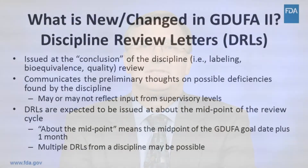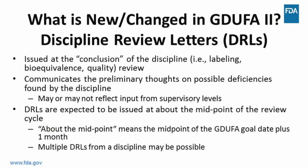The conclusion of the discipline review has occurred when, at a minimum, the primary reviewer of the discipline has read their section of the ANDA and developed preliminary thoughts on possible deficiencies. If the discipline completes the review of additional information received in response to a DRL, another DRL may be issued until it is no longer feasible within the current review cycle.